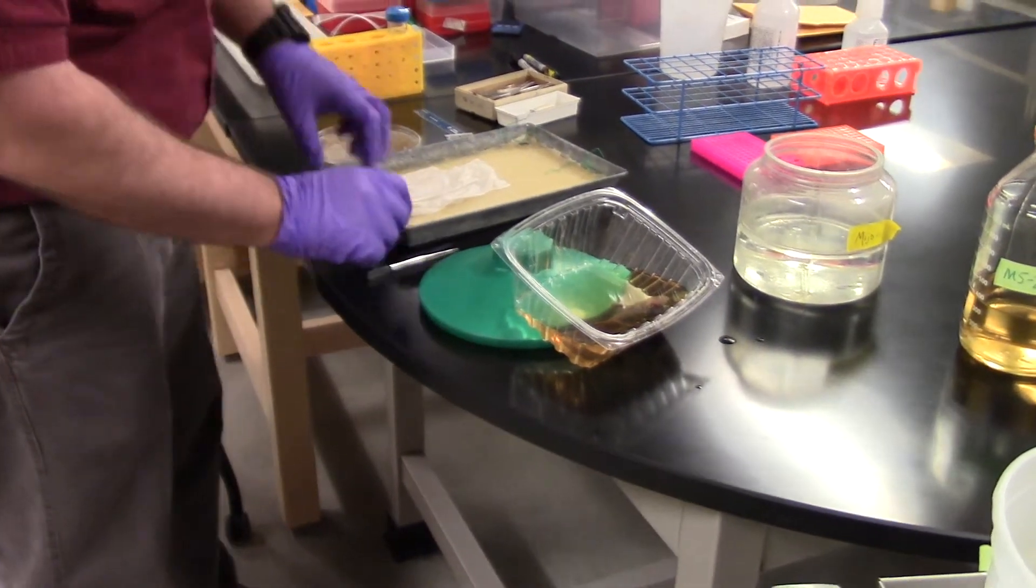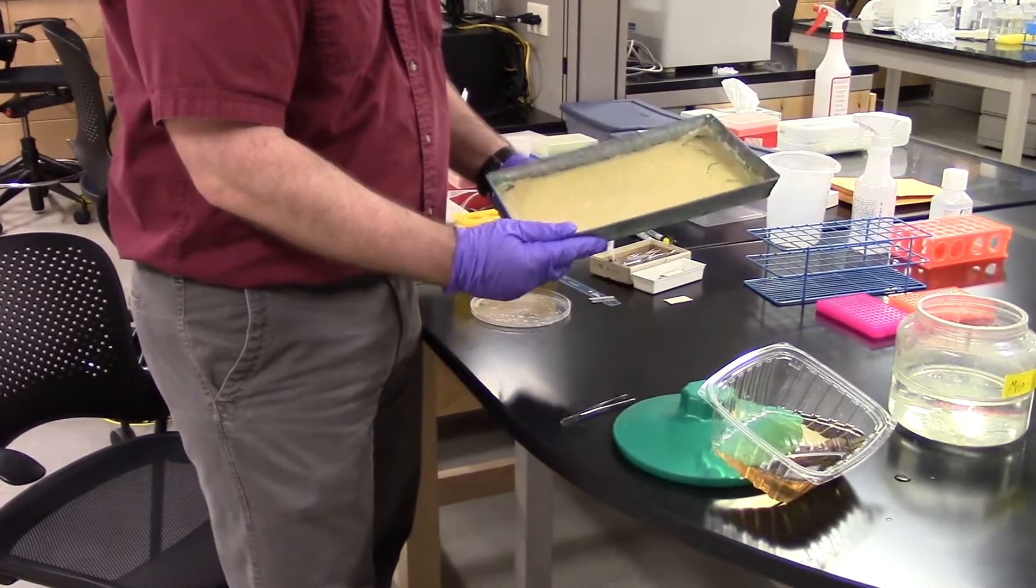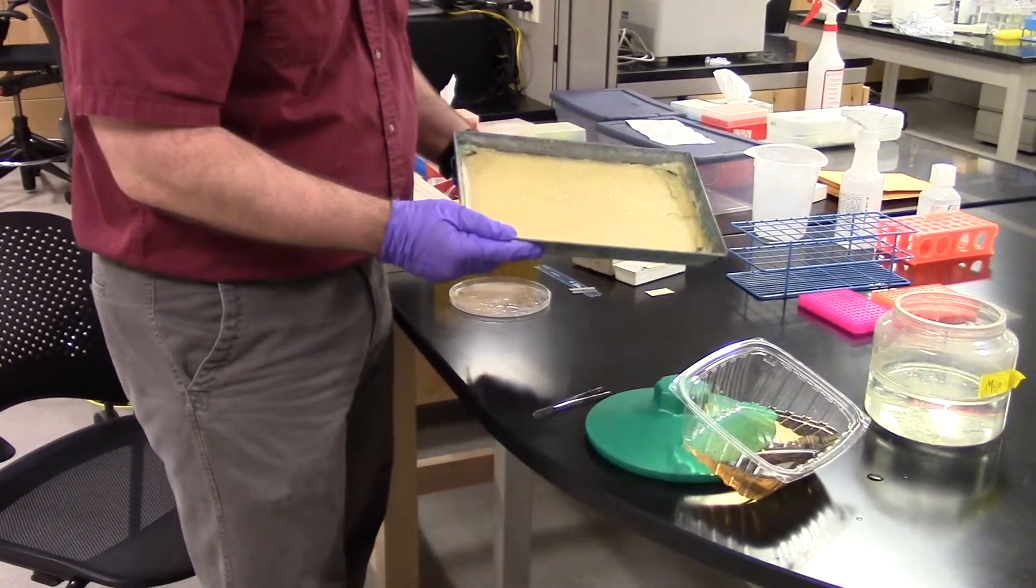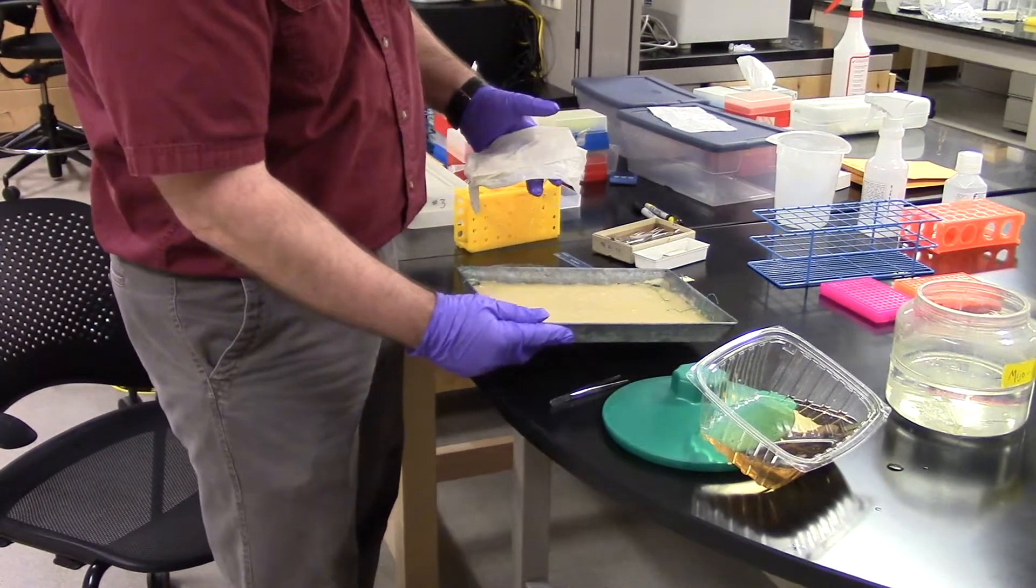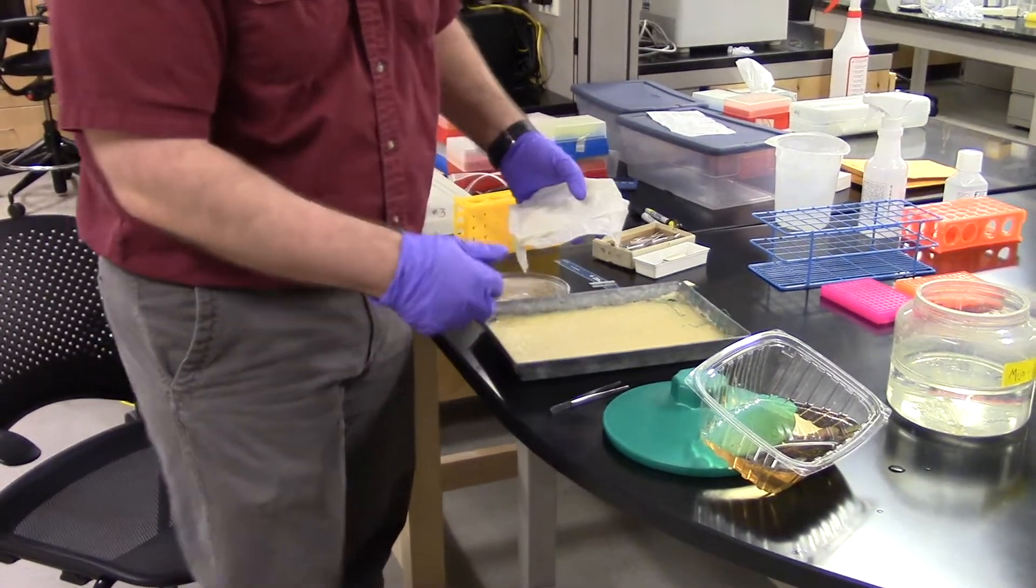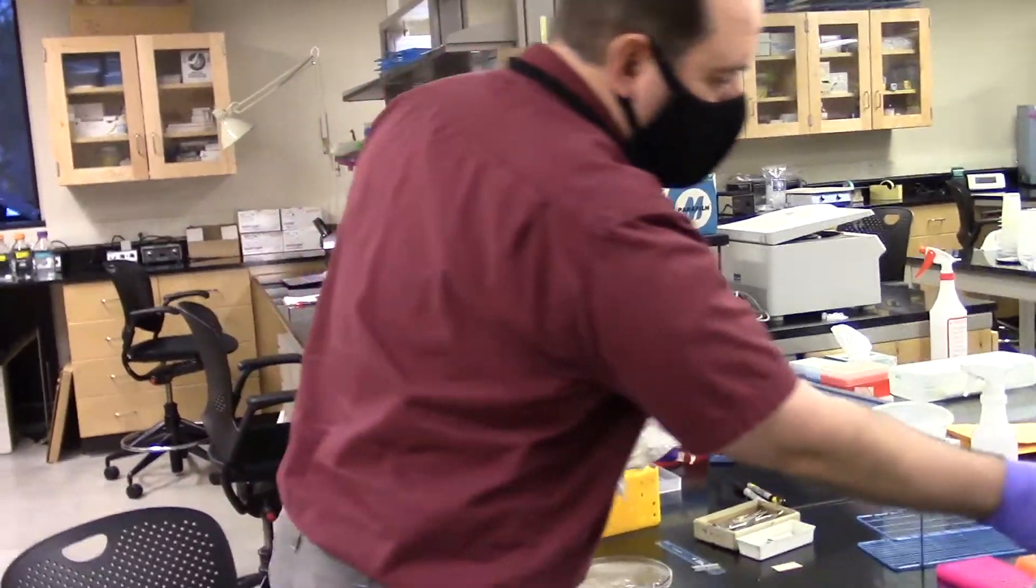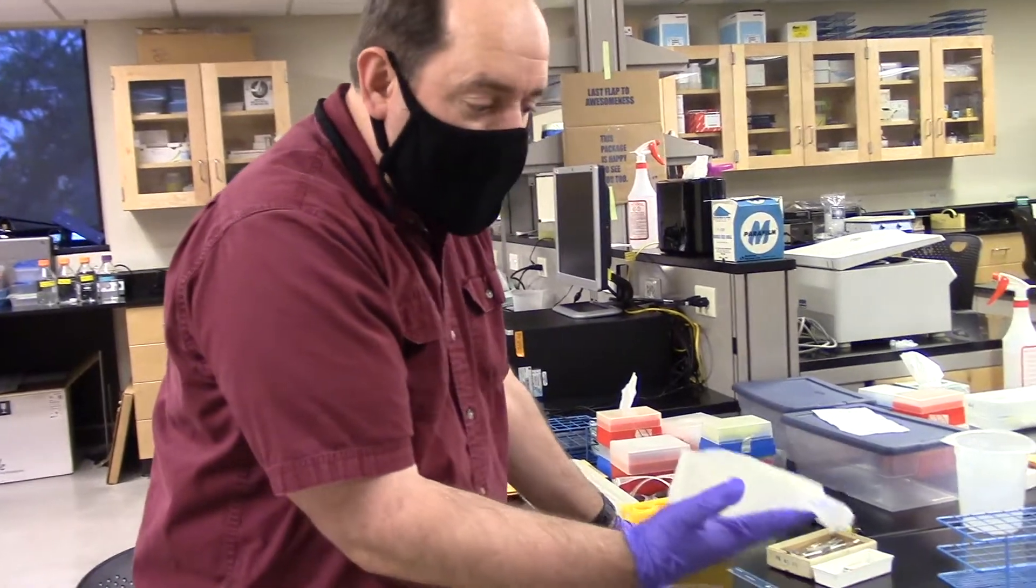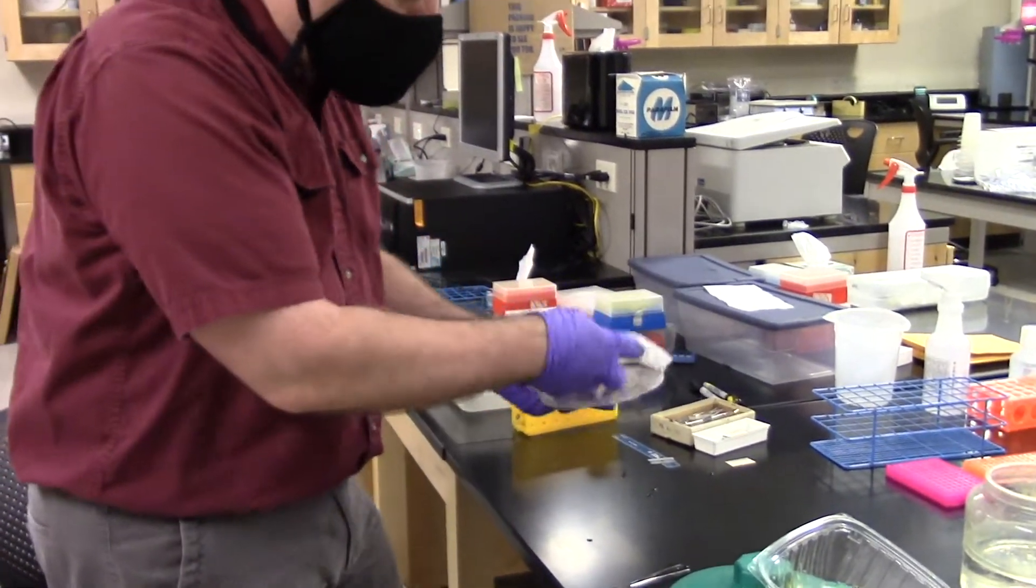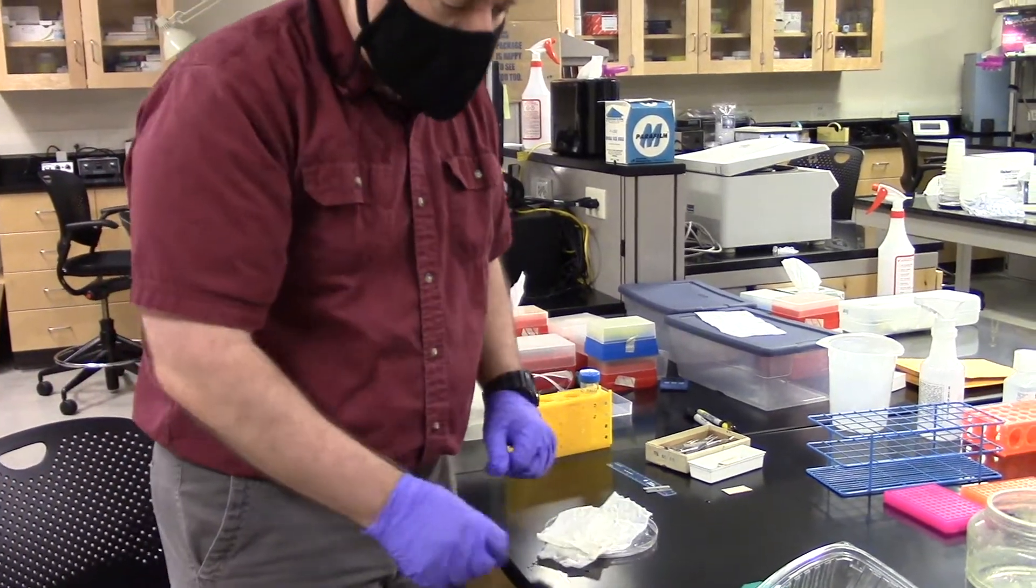So our axolotl is ready for surgery. You may recognize this dissection tray from dissections you might have done, like cat dissection or in organismal and ecological biology lab. We actually don't use these for axolotls. The reason is because they breathe through their skin. I've got some wet paper towel and I'll just use a large Petri dish and lay him on this dripping wet paper towel.